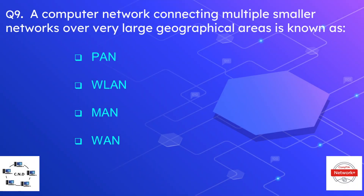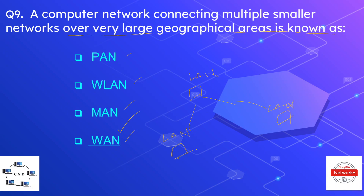Question number nine: a computer network connecting multiple smaller networks over a very large geographical area is known as — options are PAN, wireless LAN, MAN, and WAN. The correct answer is WAN. A WAN is a connection of multiple LANs, which may be in different cities or even different countries. The internet is the most popular and largest example of a WAN.